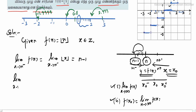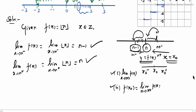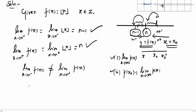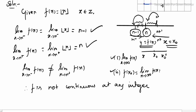Next, the right-hand limit: limit as x tends to n plus of the greatest integer function of x equals n, since approaching from the right side of n gives n itself. Now the left-hand limit equals n minus 1 and the right-hand limit equals n, so they are not equal. That is why f is not continuous at any integer, and therefore not differentiable at any integer.